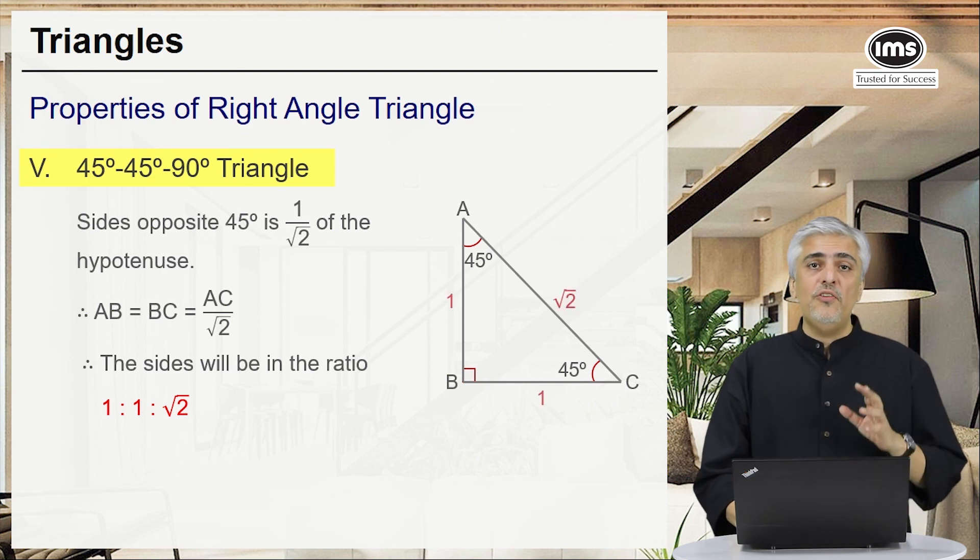So these would be your five properties around a right angle triangle. Very important. Please see that you revise this very carefully.